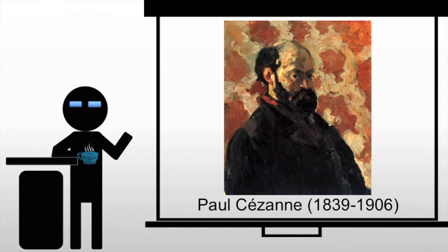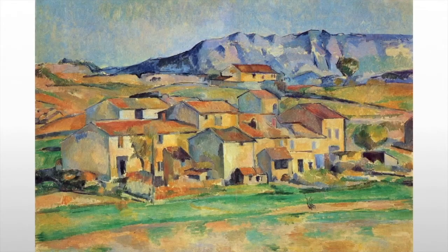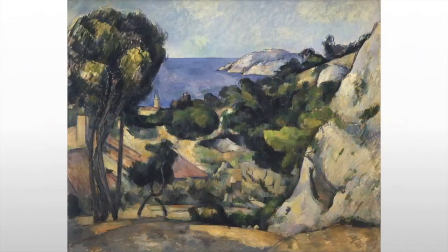Paul Cézanne is a great admirer of Delacroix, and early on allied himself with Impressionism. Although he soon was convinced that Impressionism lacked form and structure, he wanted to make Impressionism solid and durable, like museum work. He sought to order the patterns and colors that make up nature and provide structure to the perceived chaos.